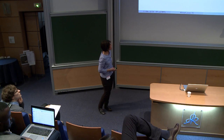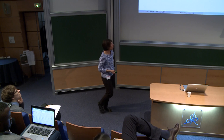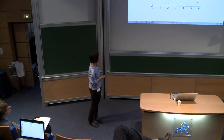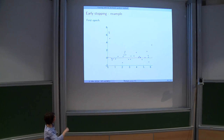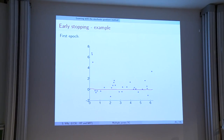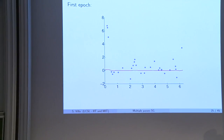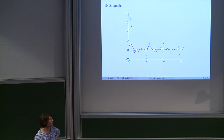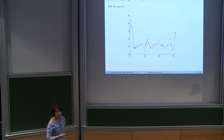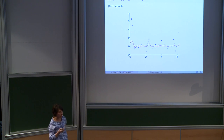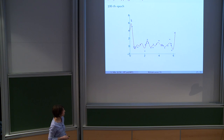Another example uses a linear regression problem where the function is a linear combination of 40 trigonometric functions, with around 30–40 data points. The result shows what happens after the first epoch of incremental gradient, then after the tenth, then after the 100th epoch. The idea is to stop the iteration in the middle to achieve a regularized approximation of our target function.